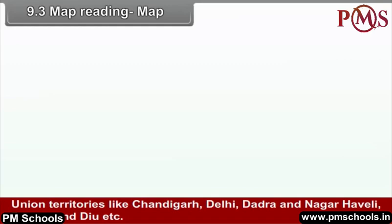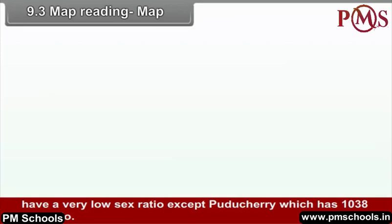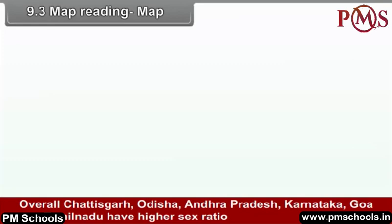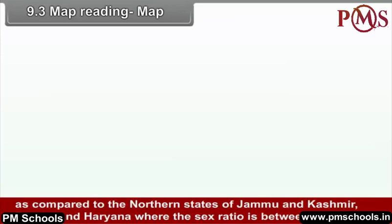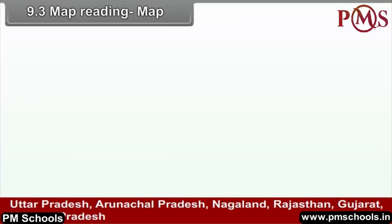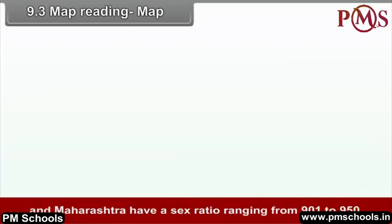Union territories like Chandigarh, Delhi, Dadra, Nagar Haveli, Daman and Diu, etc. have a very low sex ratio, except Puducherry which has a sex ratio of 1038. Overall, Chhattisgarh, Odisha, Andhra Pradesh, Karnataka, Goa and Tamil Nadu have higher sex ratios compared to northern states of Jammu and Kashmir, Punjab and Haryana where the sex ratio is between 801 to 900. Uttar Pradesh, Arunachal Pradesh, Nagaland, Rajasthan, Gujarat, Madhya Pradesh and Maharashtra have a sex ratio ranging from 901 to 950.